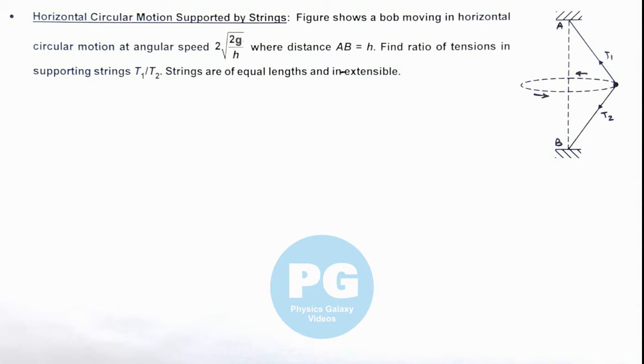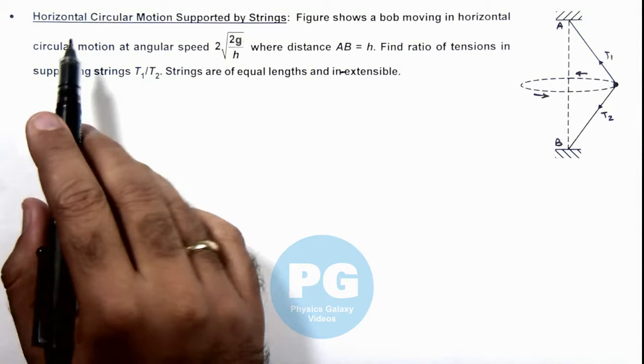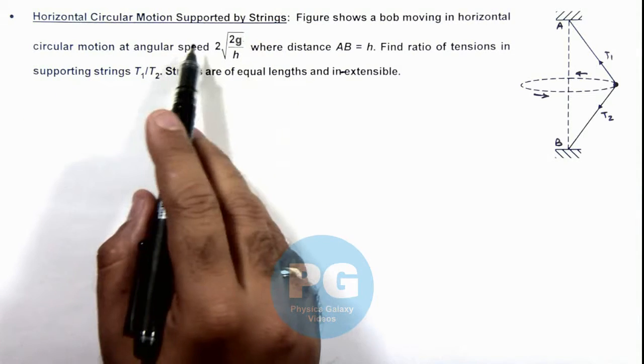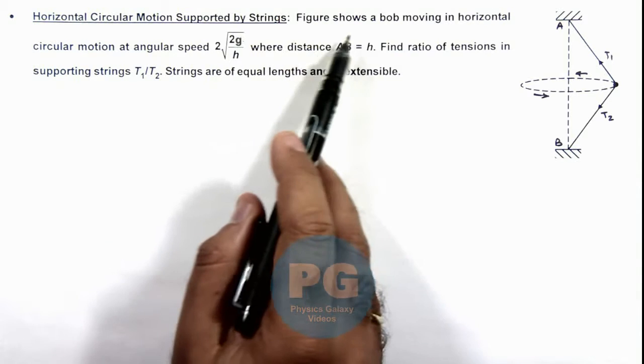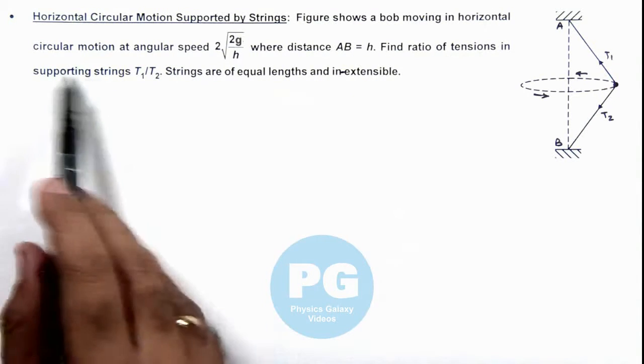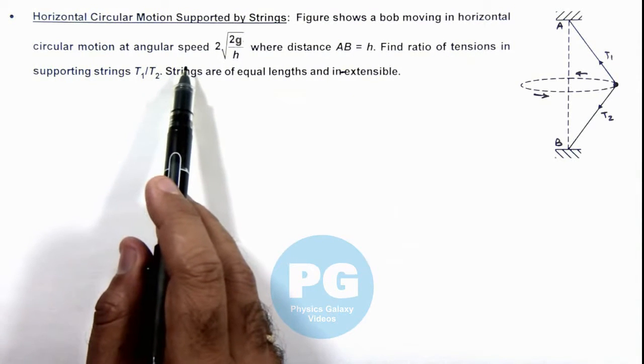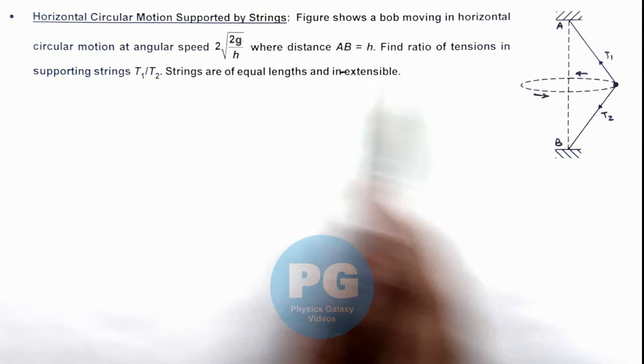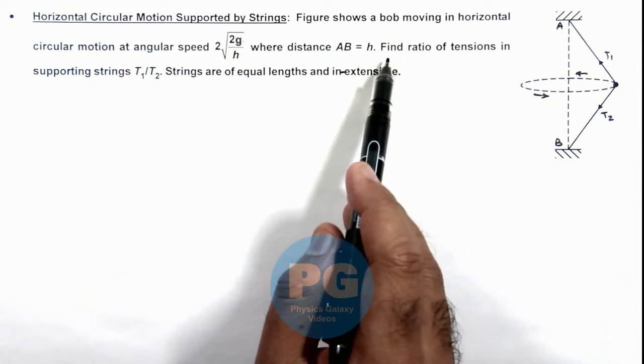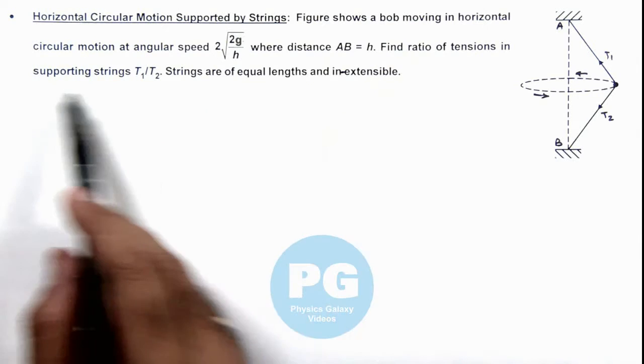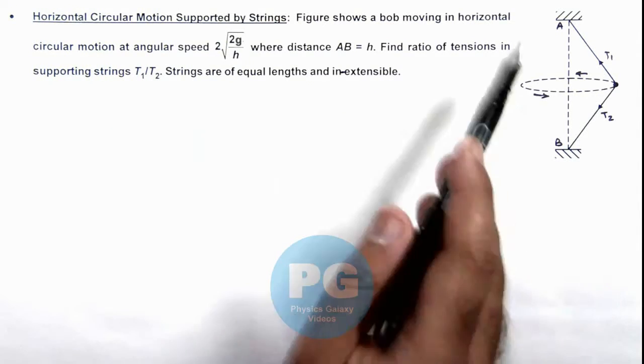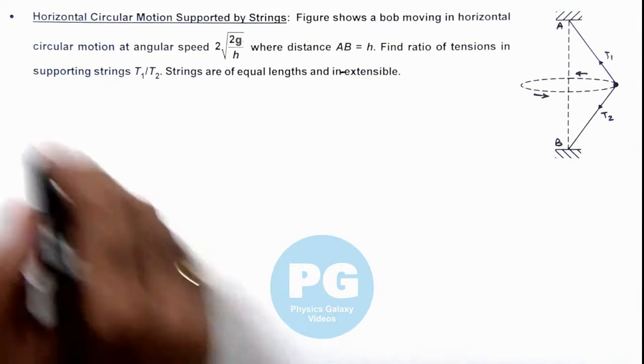In this illustration, we'll study horizontal circular motion supported by strings. The figure shows a bob moving in horizontal circular motion at angular speed 2√(2g/h), where distance AB = h. We are required to find the ratio of tensions in supporting strings T₁/T₂. The strings are inextensible and of equal lengths.